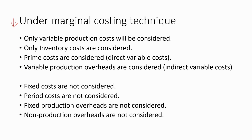The following points describe which costs can be considered under Marginal Costing and which cannot. You have to have a clear understanding about these points. Only variable production costs will be considered — only inventory costs are considered. Prime costs are considered; these are the direct variable costs. Variable production overheads are also considered; these are the indirect variable costs.